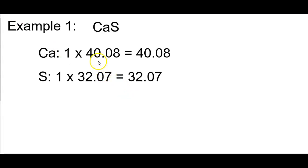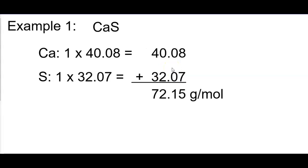For instance, remember we saw 40.08 for calcium and 32.07 for sulfur. So you're going to take one times 40.08 and one times 32.07 and get those numbers. Then you're going to sum your results, and this is your molar mass — 72.15 grams per mole.